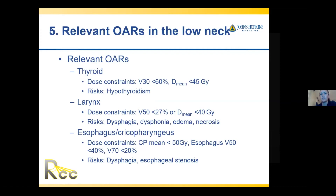For retropharyngeal and retrostyloid node treatment, the bilateral parotids are a concern — it's very hard to achieve a mean of 26 Gy when treating bilateral retropharyngeal and retrostyloid nodes. The cochlea and inner ear are also at risk; it's hard for nasopharyngeal cancer to achieve a max of 45–50 Gy. If that's not achievable, aiming for a max of 55 Gy and a mean less than 70.5 Gy is helpful, or trying to spare one side preferentially if disease is lateralized. Brainstem and spinal cord constraints are usually achievable unless there's skull base involvement.